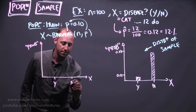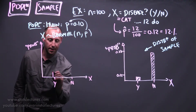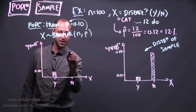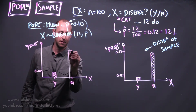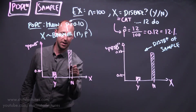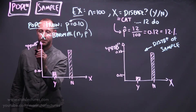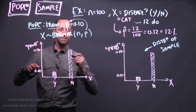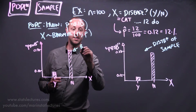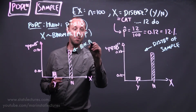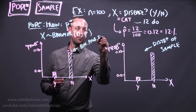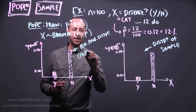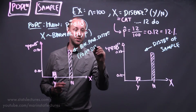We can think of someone having the disease — yes or no. In the population, we suppose we know 10% of the population has the disease and 90% do not. This is the binomial probability distribution, and we can think of it as describing the population's distribution.